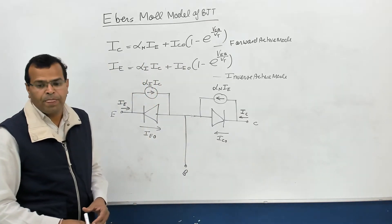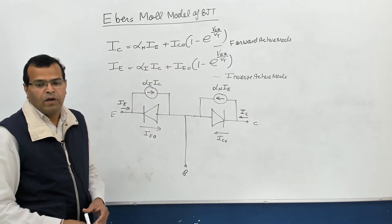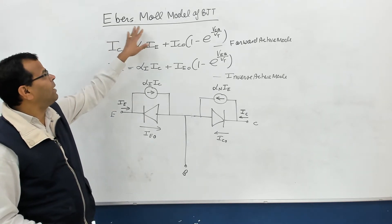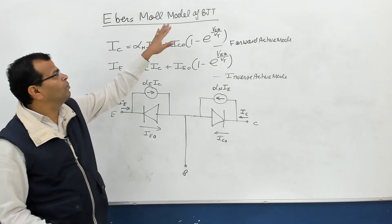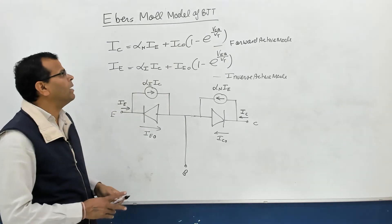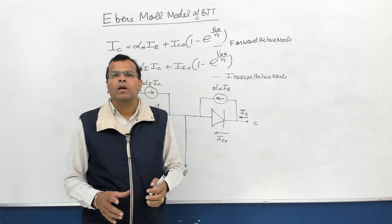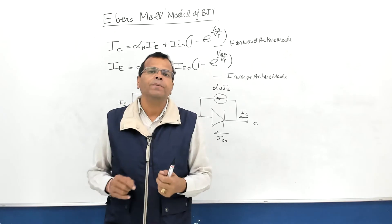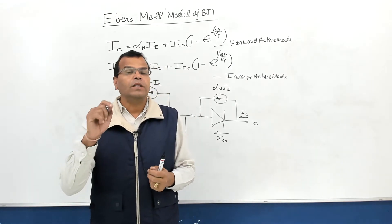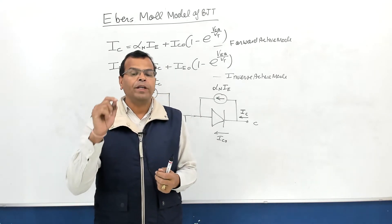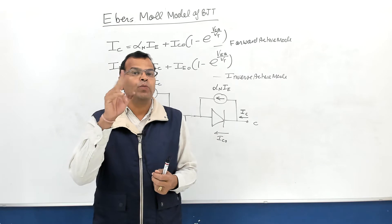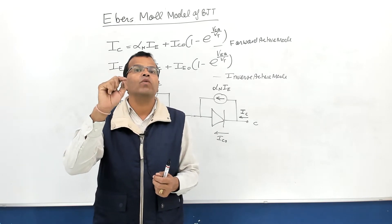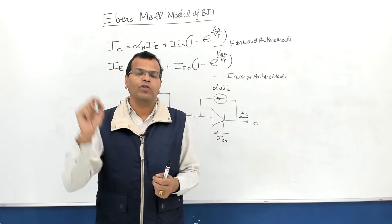Hello friends. Now we will discuss the next topic of BJT, that is the Ebers-Moll model of BJT. Basically, the Ebers-Moll model is the two-diode model of BJT. This model makes use of two modes of operation called forward active mode and inverse active mode of operation.